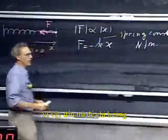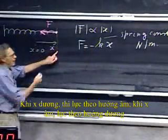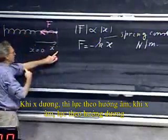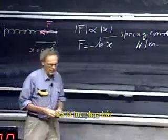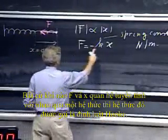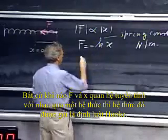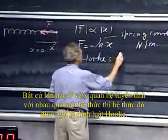So the minus sign takes care of the direction. When x is positive, then the force is in the negative direction. When x is negative, the force is in the positive direction. It is a restoring force. Whenever this linear relation between f and x holds, that is referred to as Hooke's law.